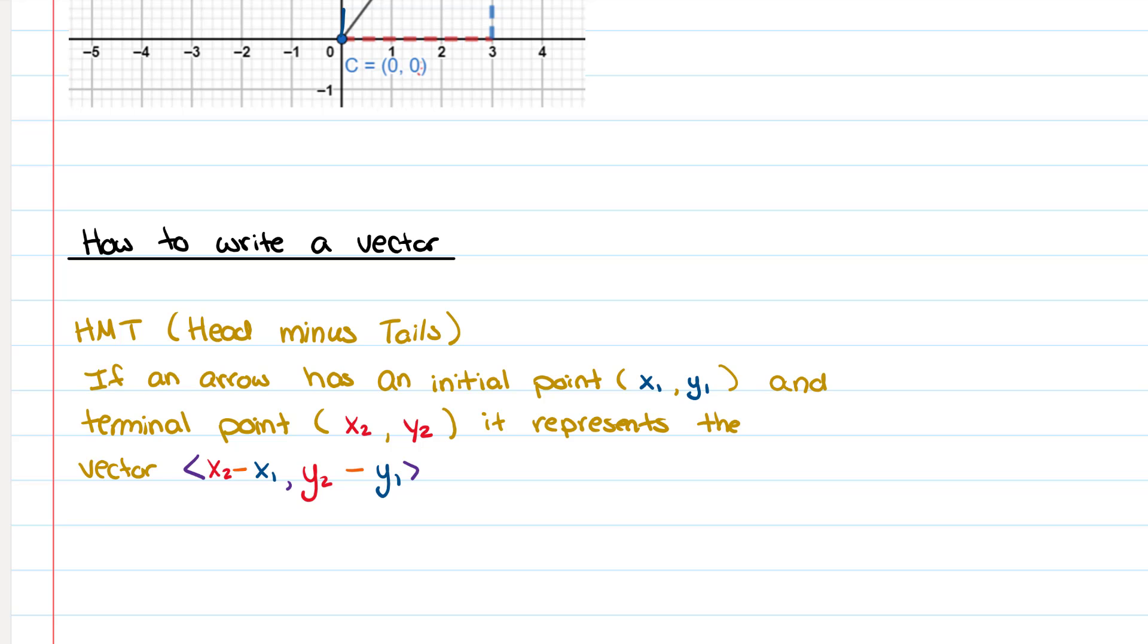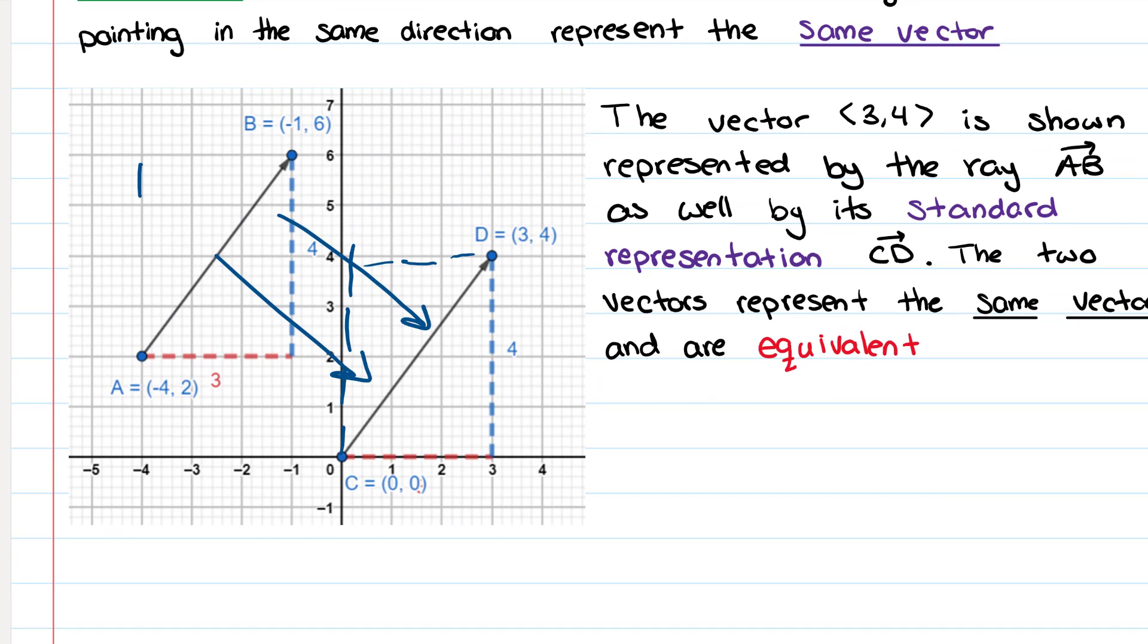So for example, in this vector here, this is my x1 and my y1 and this is my x2 and my y2. I know that the point negative 1, 6 is my terminal point because that is where the arrow stops or points.